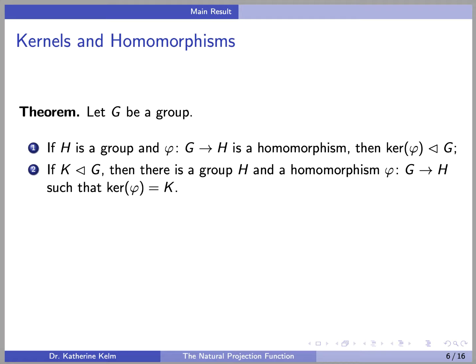Now we come to our main result. Let G be a group. If H is a group and phi is a homomorphism from G to H, then the kernel of phi is a normal subgroup of G. That's an elementary result. Perhaps more surprising: if K is any normal subgroup of G, then there is a group H and a homomorphism phi from G to H whose kernel is K.